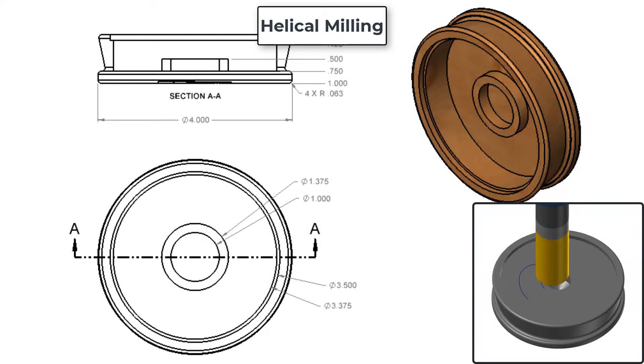In this video I'll demonstrate how to program a 1 inch cutter to helically mill the 3 3/8th pocket to the top of the island at negative 0.5.